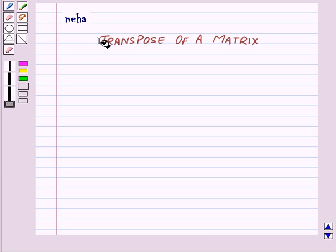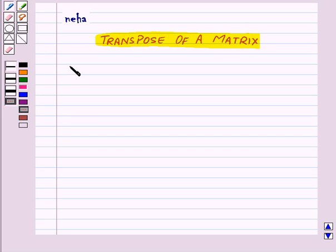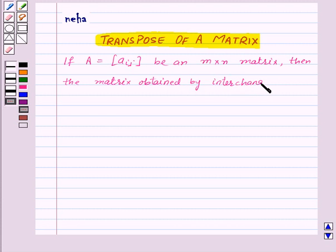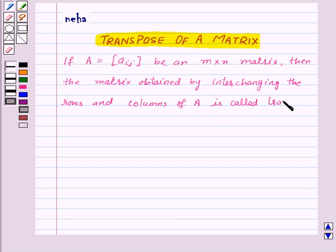Hi and welcome to the session. Today we will learn about the transpose of a matrix. If A is given by Aij, an M by N matrix, then the matrix obtained by interchanging the rows and columns of matrix A is called the transpose of matrix A.